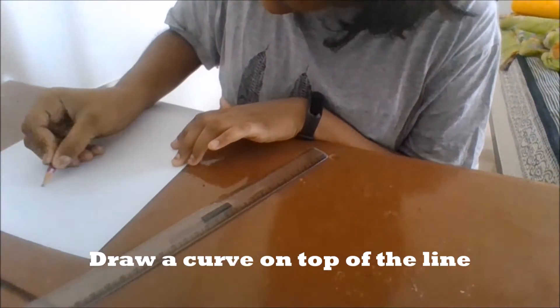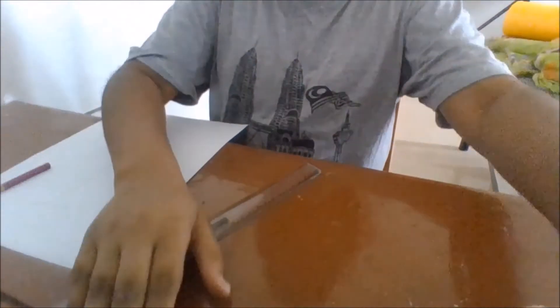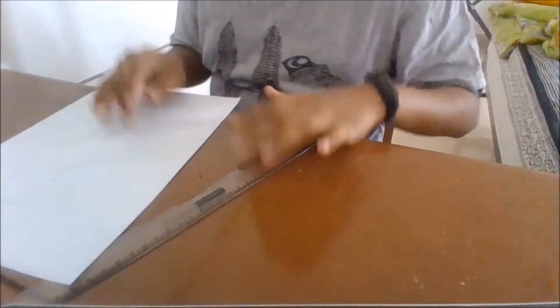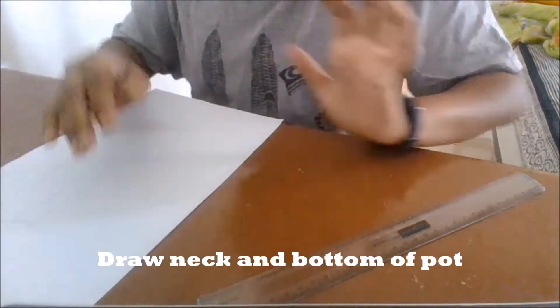Now draw a curve on the top of the line with a 4B pencil like shown here. Now draw the neck and the bottom of the pot.